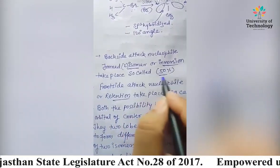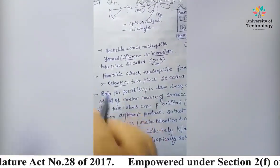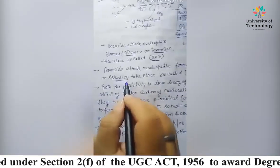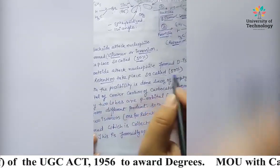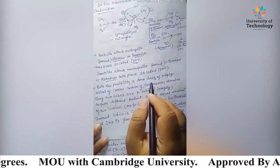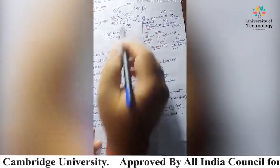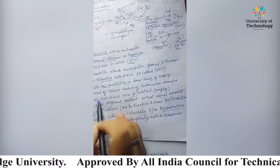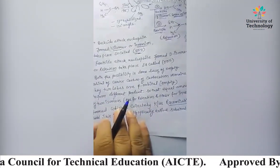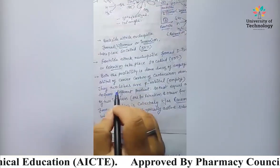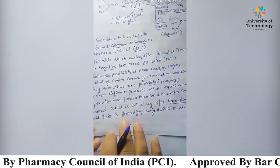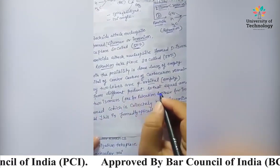The D-isomer is also formed 50%. Backside attack of the nucleophile forms the L-isomer, which is called inversion, and this is formed 50%. Front side attack of the nucleophile forms the D-isomer, or retention, which also takes place 50%. Both possibilities arise because of the empty p-orbital in the form of two lobes, forming different products.